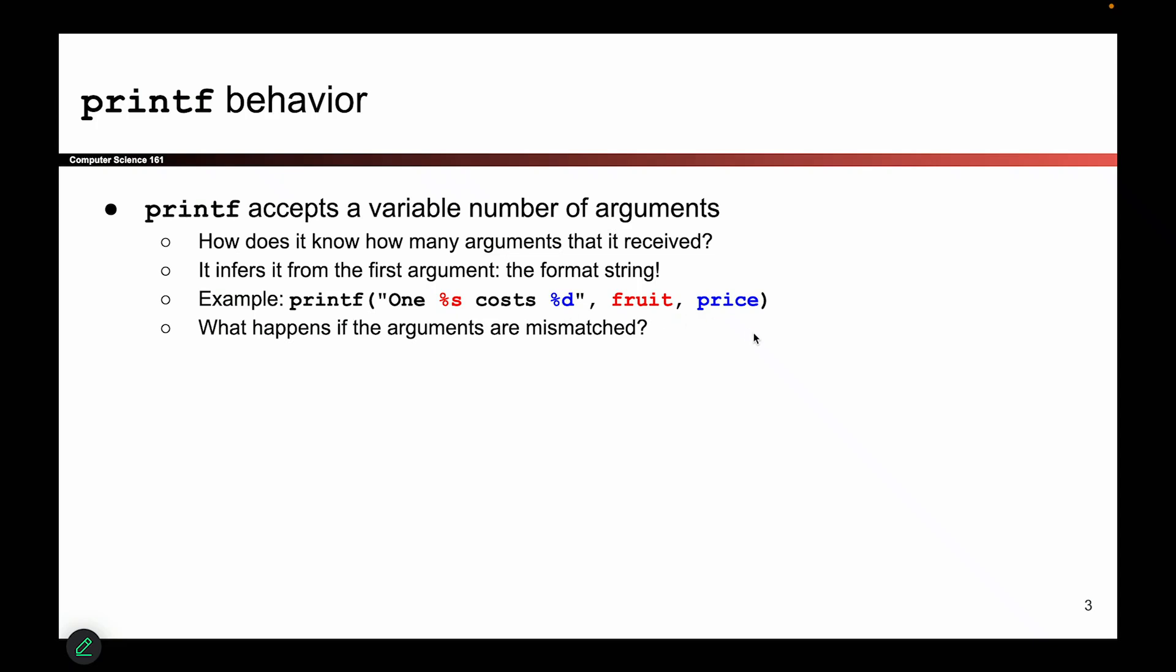Something interesting about printf is that it takes in a variable number of arguments because maybe the user had one placeholder and not two. Maybe the user had five placeholders, maybe zero, maybe ten. So printf can actually accept a variable number of arguments depending on how many things the user wants to add as a placeholder.